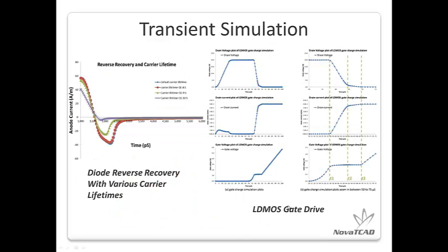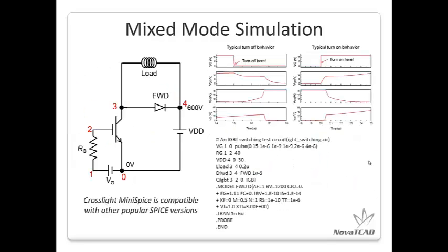This slide covers diode reverse recovery simulation with various carrier lifetimes. On the right-hand side is the LDMOS turn-on transient simulation with gate charge plotted against time. Mixed mode simulation is performed with CrossLite's Minispice, showing a typical turn-on and turn-off behavior of an inductive load IGBT with freewheeling diode using SPICE models. CrossLite's Minispice is compatible with other SPICE versions such as PSPICE.